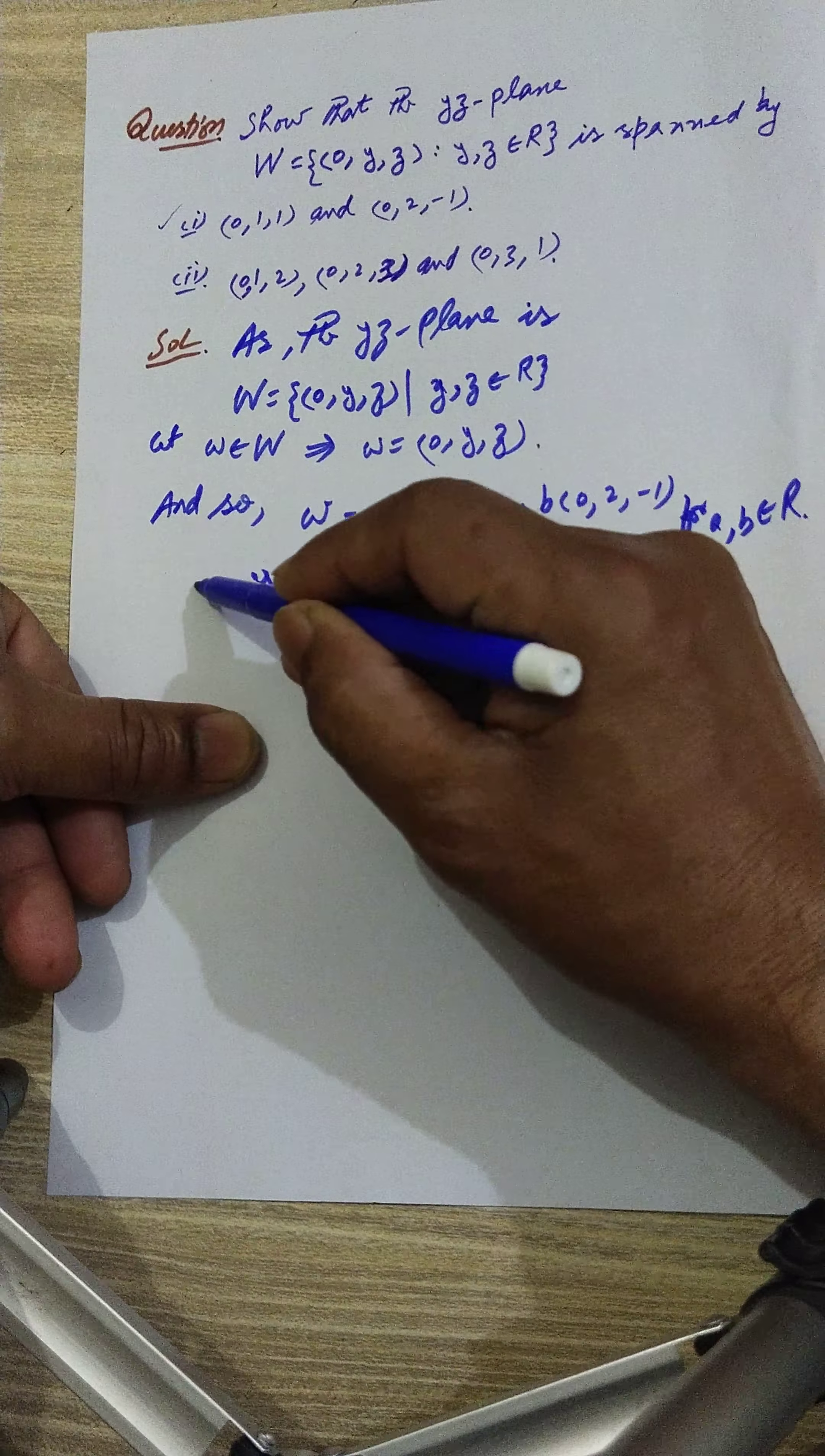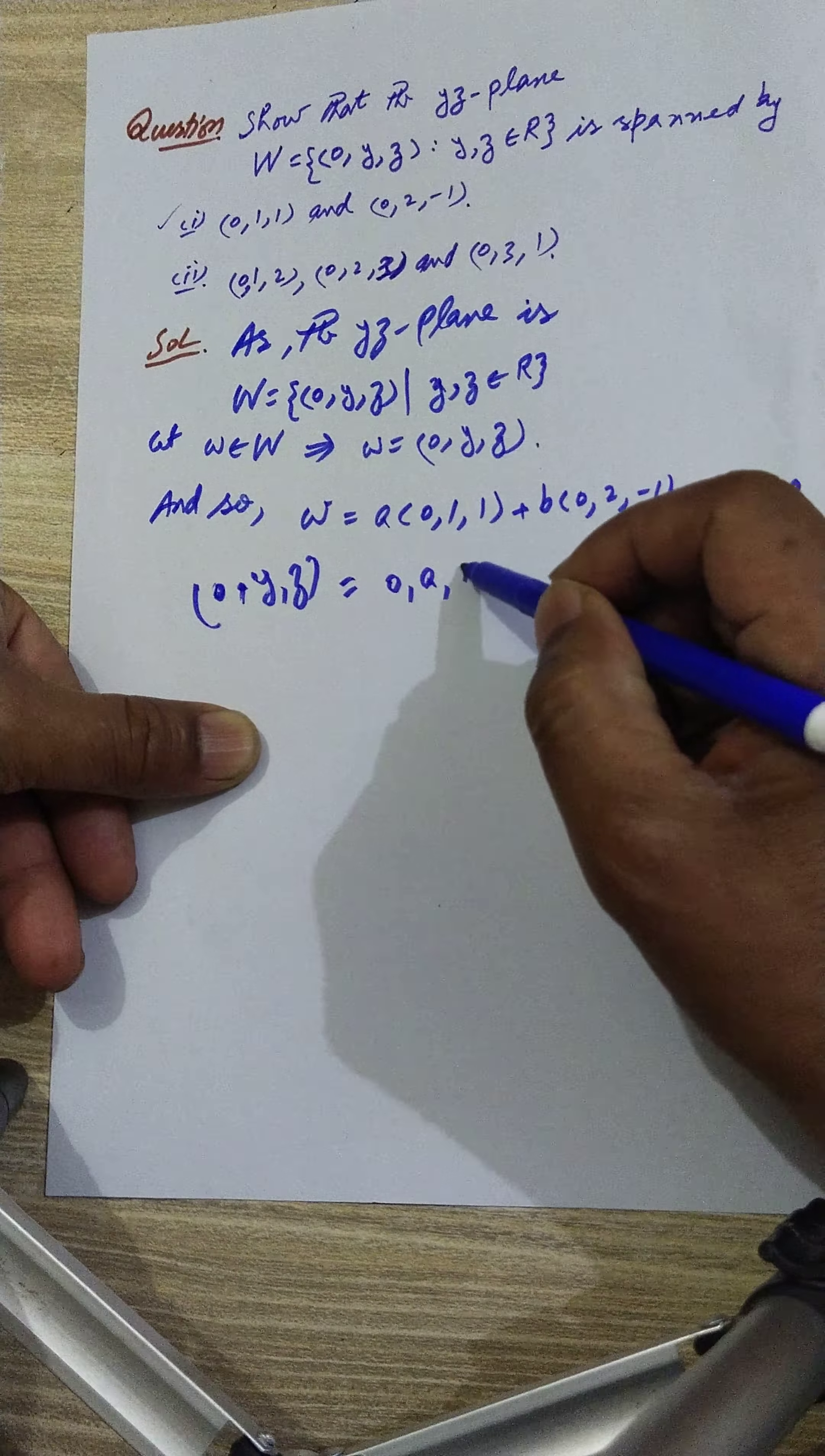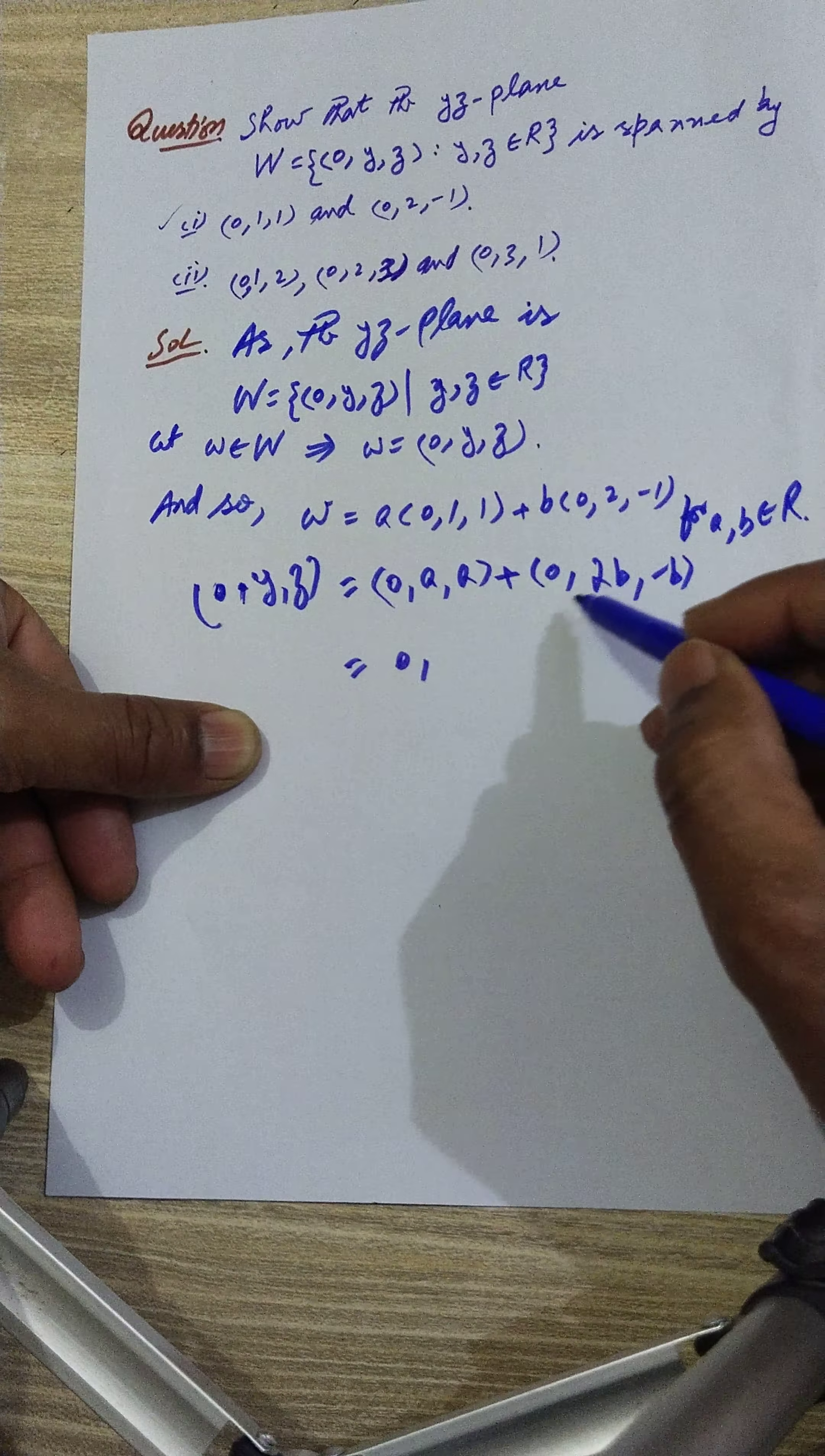(0,y,z) is equal to, we multiply this by a inside, so this becomes (0,a,a). We multiply this by b, so this becomes (0,2b,-b).